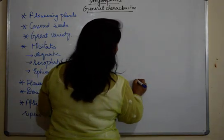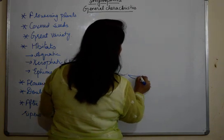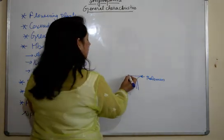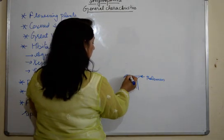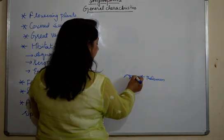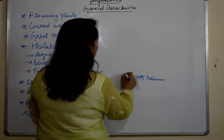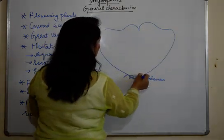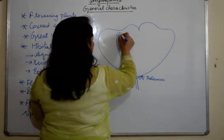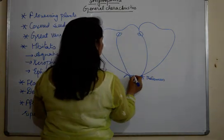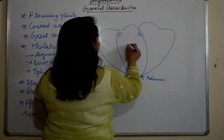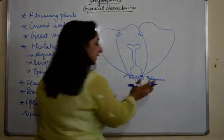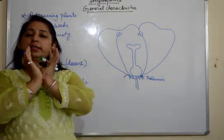If we see the structure of a flower, we have this first part which is known as the thalamus. On this thalamus, the four whorls are arranged. The first whorl are the sepals, the second whorl are the petals, the third whorl are the stamens, and the fourth whorl is the centrally placed pistil. Thalamus is the receptacle on which all these four whorls are arranged.